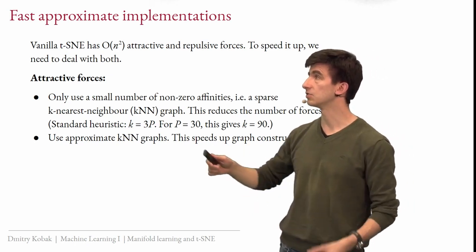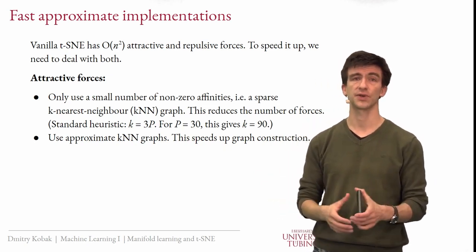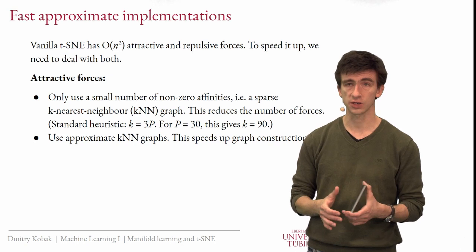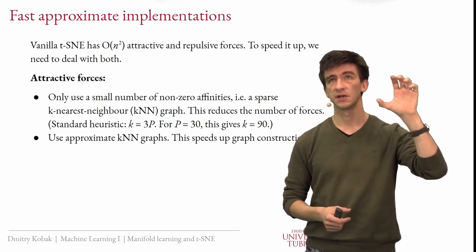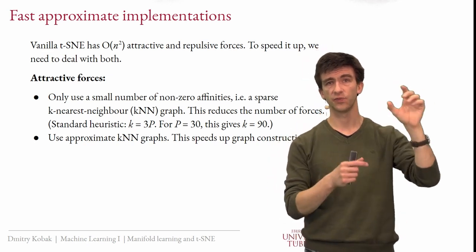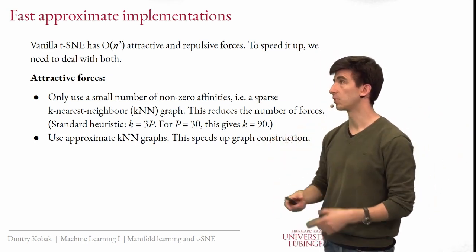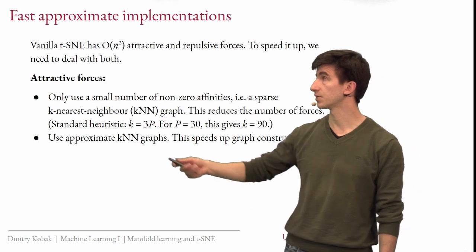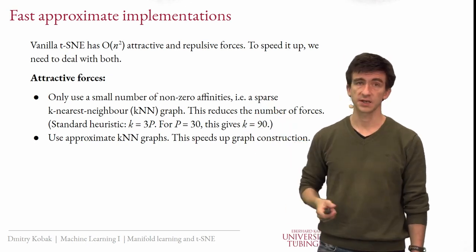An even larger gain comes from using an approximate KNN graph. There are algorithms to construct the KNN graph approximately — meaning you find 90 neighbors for each point, but maybe only 85 are truly among the 90 nearest neighbors and five are not. It works well enough that it makes no difference for T-SNE, and these approximate algorithms are much, much faster than finding the exact KNN graph.